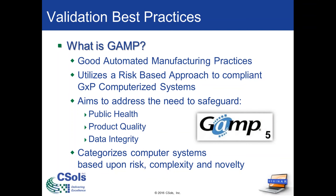The most current version is referred to as GAMP 5, and it lays out the foundation for achieving compliance and fitness for intended use for all GXP-regulated systems in a pragmatic and efficient manner. Many corporations leverage the outlined practices in GAMP 5 while validating complex computer systems, such as Empower III, because GAMP 5 categorizes computer systems based upon risk, complexity, and novelty. GAMP 5 categorization then outlines a specific risk-based approach to validating such categorized systems.